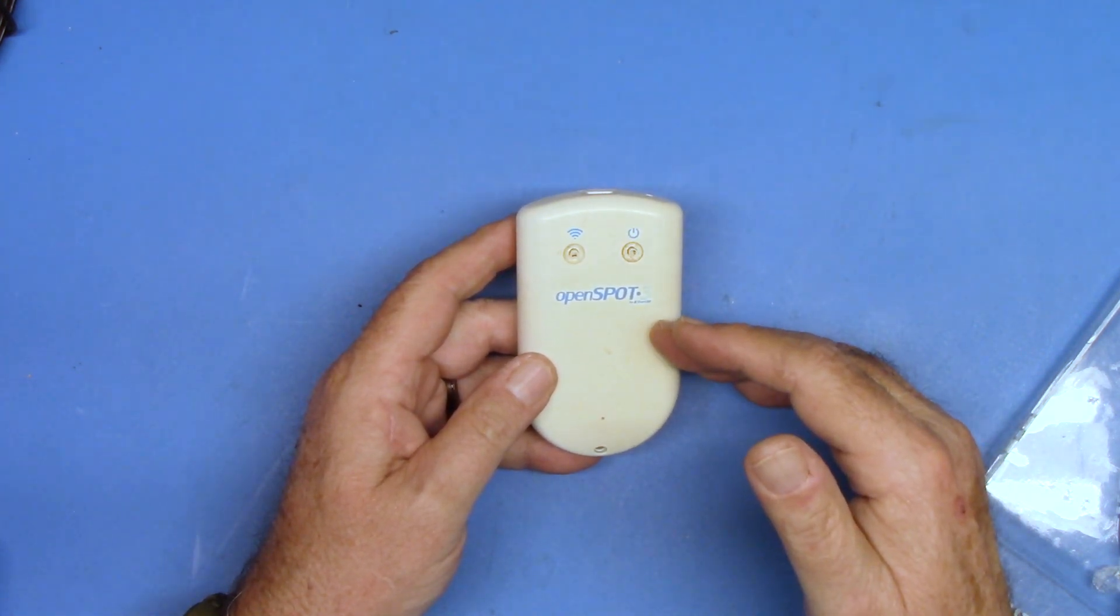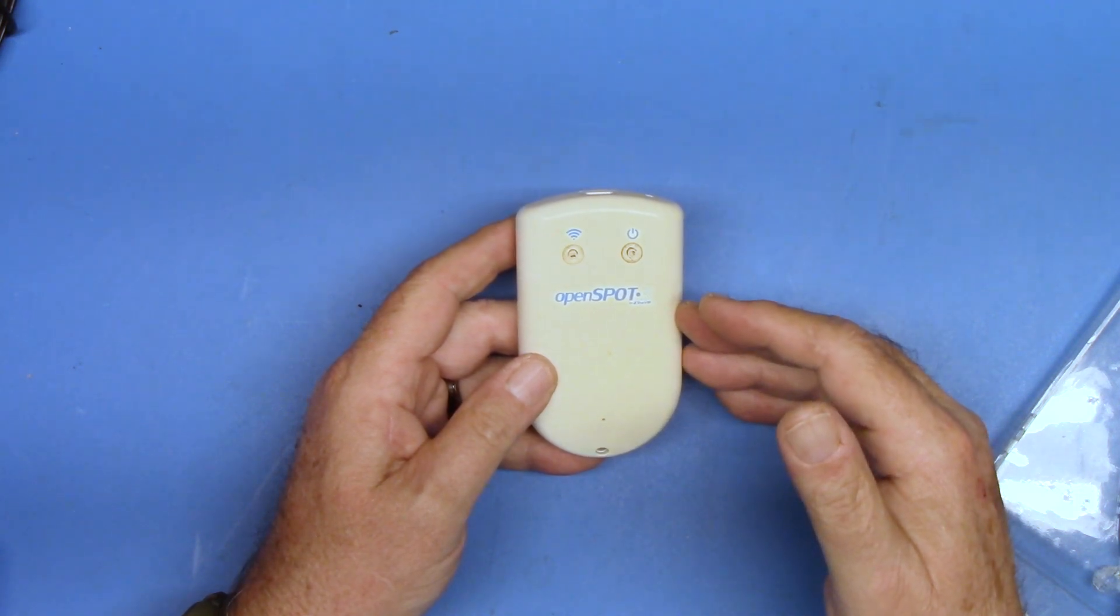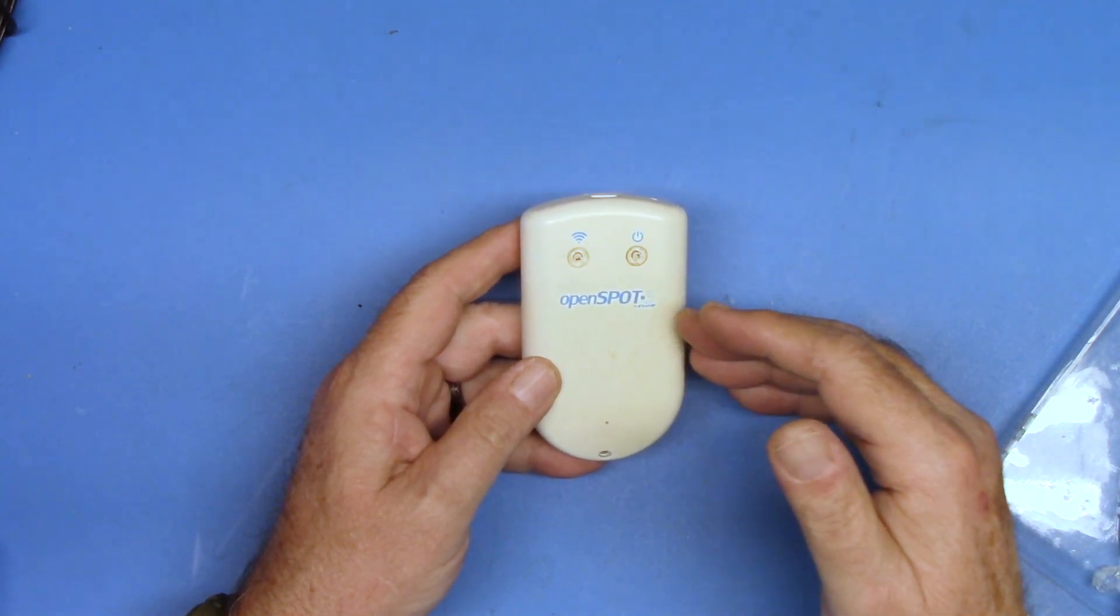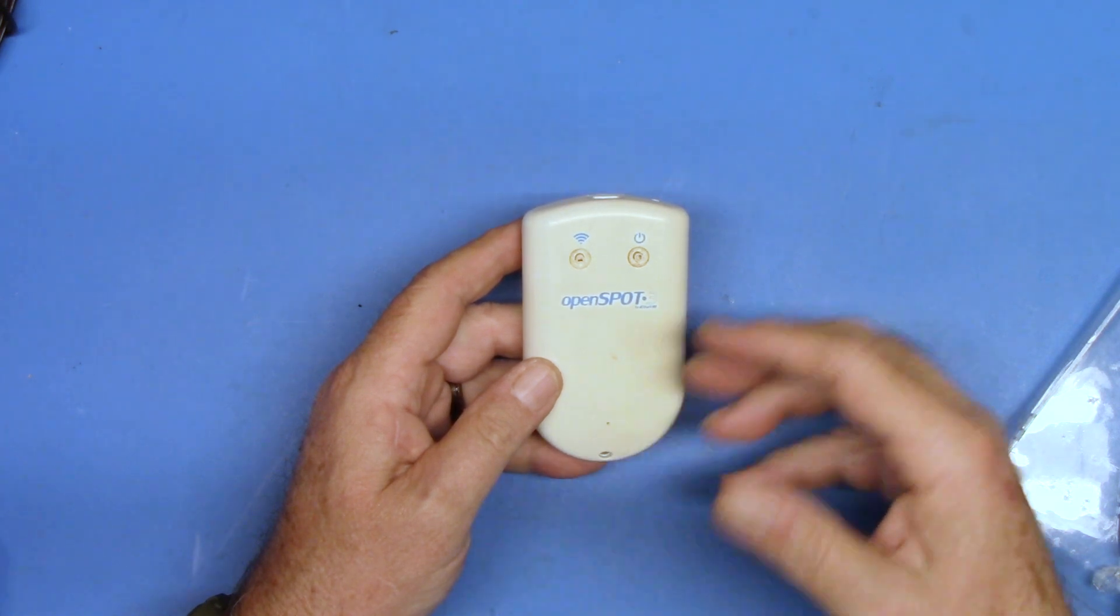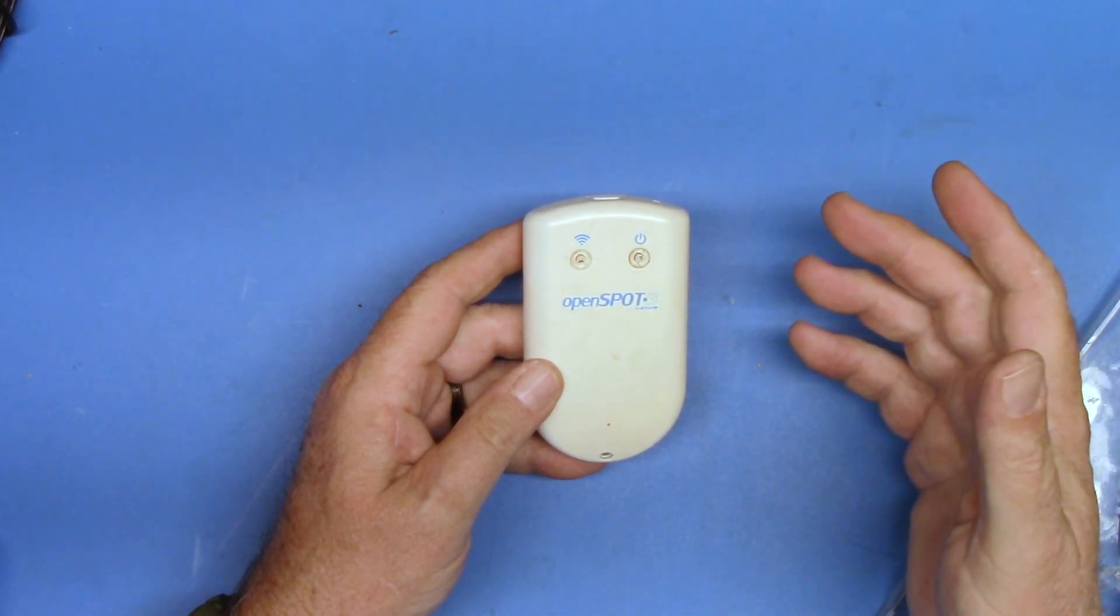But they could ship this thing as a complete kit, a complete product with the battery in it. But they could never send the batteries overseas to the United States. They could send them to Europe. SharkRF is in the Ukraine.